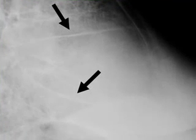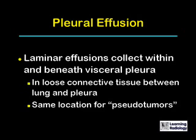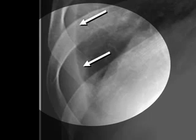Pleural effusions occur commonly with congestive heart failure. Laminar effusions are effusions that collect within and beneath the visceral pleura in the loose connective tissue between the lung and the pleura. This is the same location in which pseudotumors or vanishing tumors collect in some patients with congestive heart failure. This is an example of a laminar effusion. Normally, the air in the lung extends to the interior portion of each rib, but in this patient, the white arrows point to a white edge representing the laminar effusion, shown by the double black arrowhead indicating the thickness of the effusion.